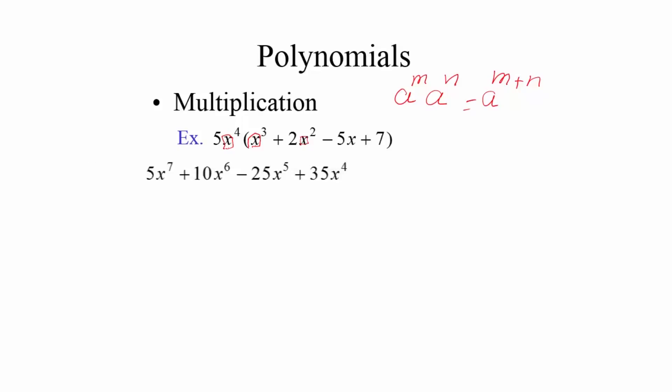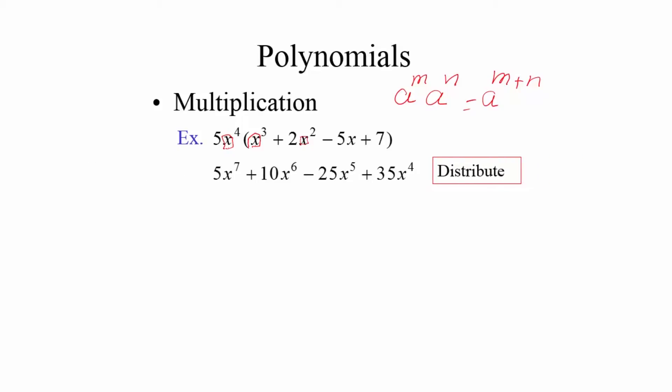Continuing: 5x^4 × (-5x) = -25x^5, because the powers 4 and 1 add to 5. And 5x^4 × 7 = 35x^4, since there is no additional x factor. The full result is 5x^7 + 10x^6 - 25x^5 + 35x^4.